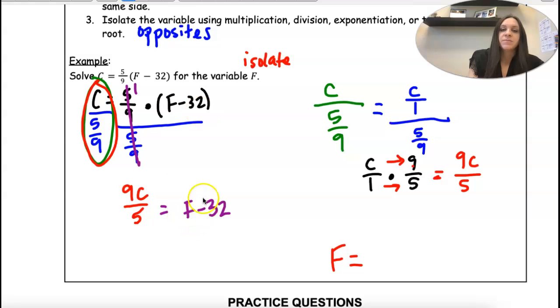Okay, now we're really close. We need to get rid of the 32. So we're subtracting it, we're going to add it. So now we have F equals 9C over 5 plus 32.